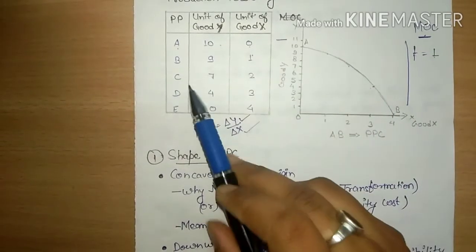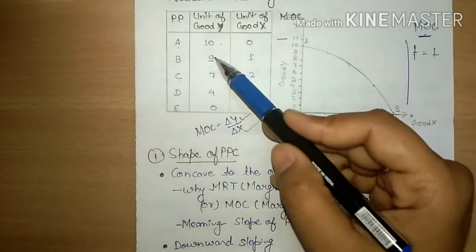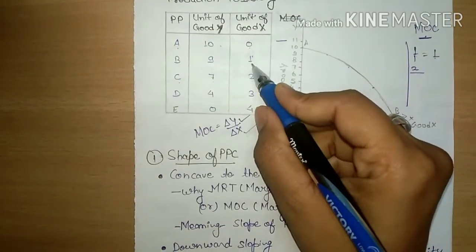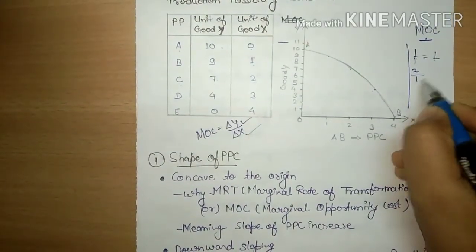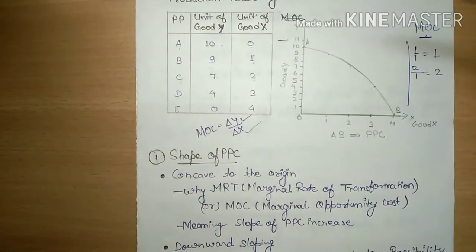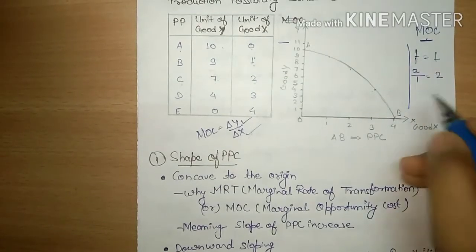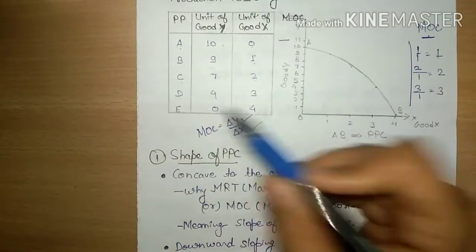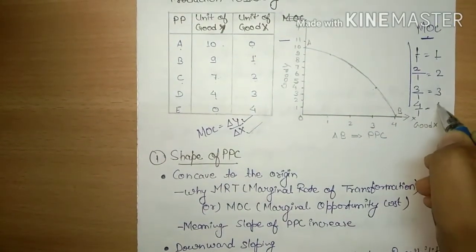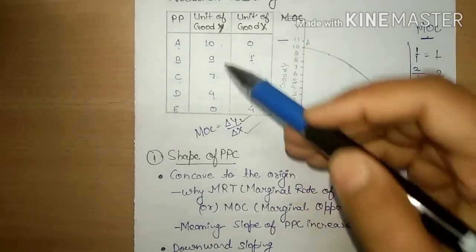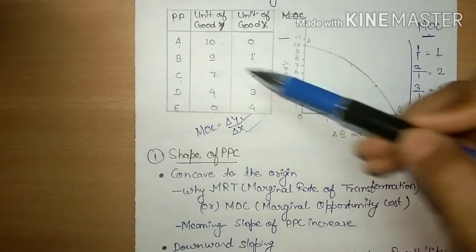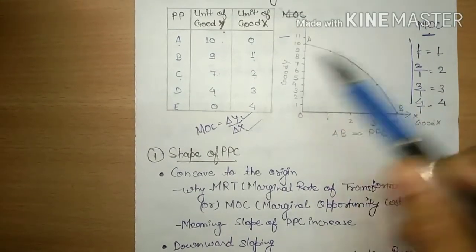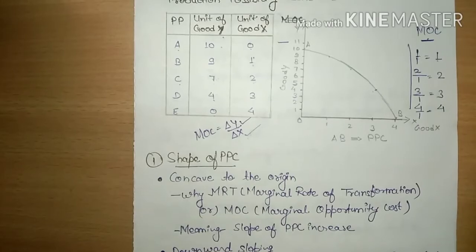Pehle wale ka nil hai. Aur C point par agar dekhte hain toh yahan 2 point decrease hue — toh 2 divided by 1 = 2 aayega. Next D point par: 7 mein se 4 gaya, itna bacha 3 — toh 3 by 1 = 3 aayega. Next ismein 4 ke baad direct 0 ho gaya — toh 4 by 1 means 4. Toh yeh cheez aapko samajh mein aayi — MOC calculate kaise ki jaati hai PPC ke liye. Jaise PPC mein aap Good X aur Good Y ko direct graph mein show karte hain, dono ka jo subtraction ya dono ke changes ka formula hai, usi ke basis pe aapka MOC bhi aata hai.